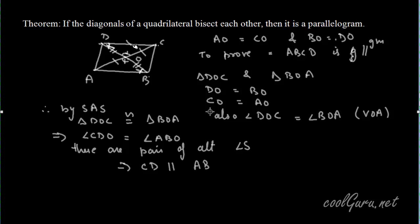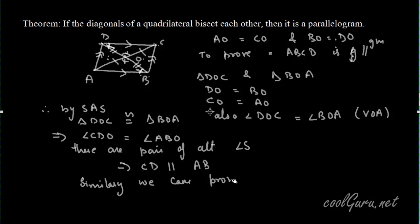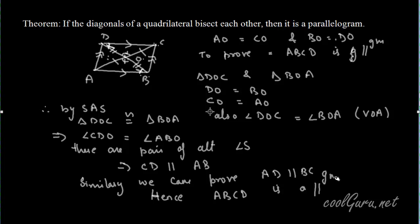Similarly, by proving triangles AOD and COB congruent in the same manner, we can prove that line AD is parallel to BC. Since both pairs of opposite sides are parallel, ABCD is a parallelogram. Hence, it is proved that ABCD is a parallelogram because both pairs of opposite sides are parallel.